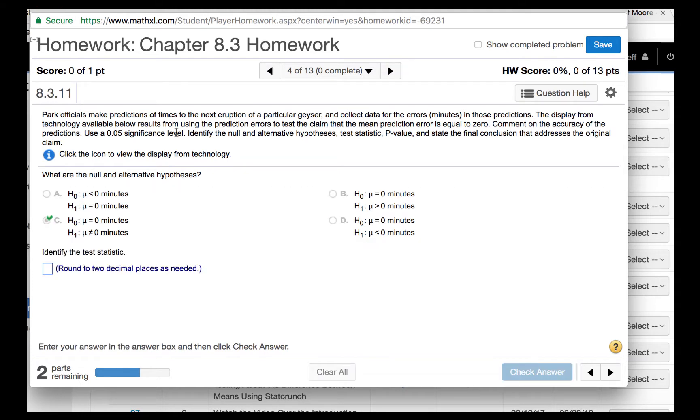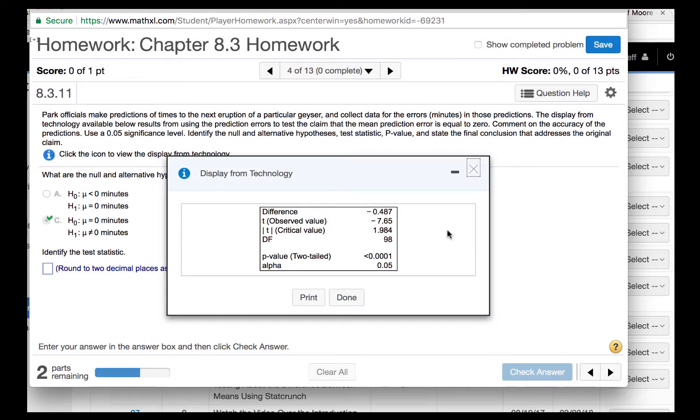Now identify the test statistic. If we click on this icon, then we can see the results. It says that the observed t-value is minus 7.65.